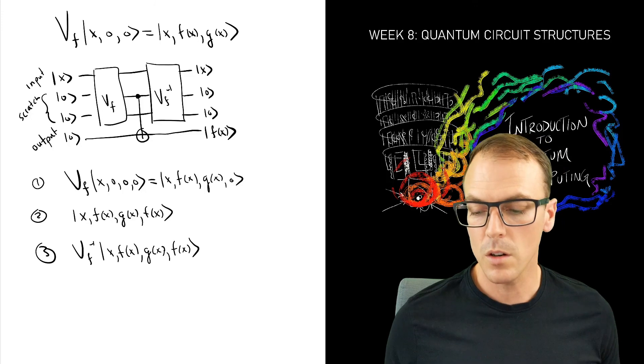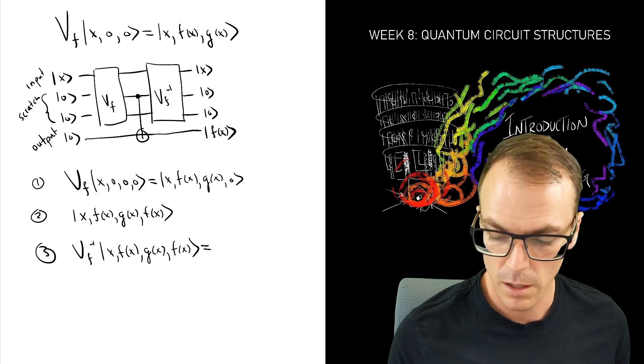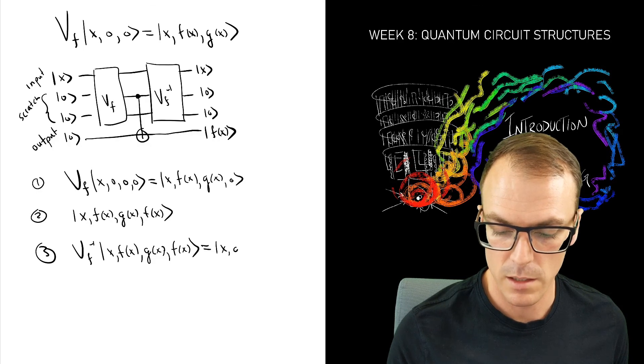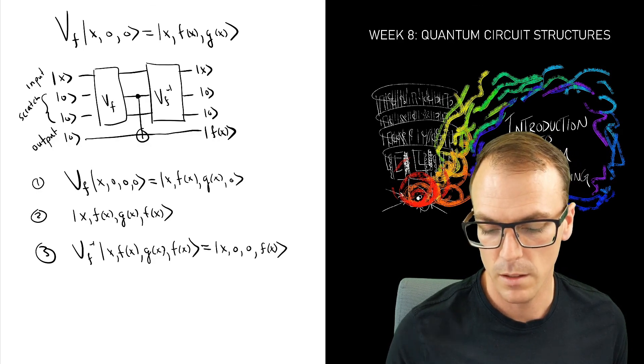But this returns those first three registers to their original state. And so this becomes x, 0, 0, f of x. And we're done.